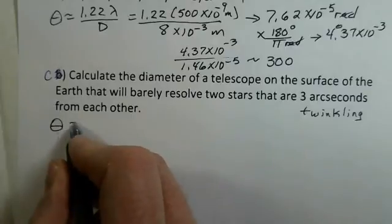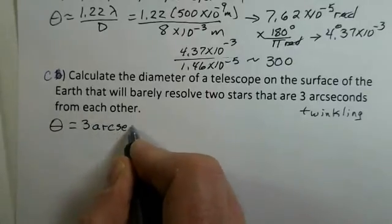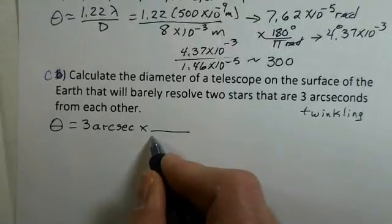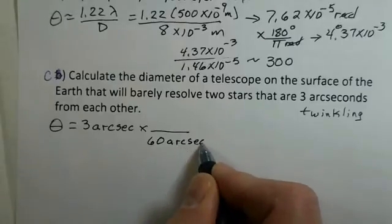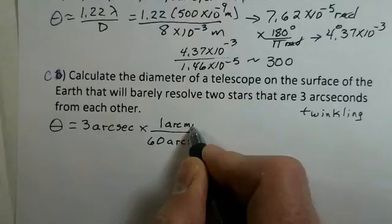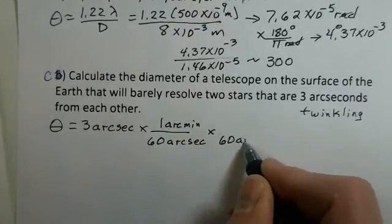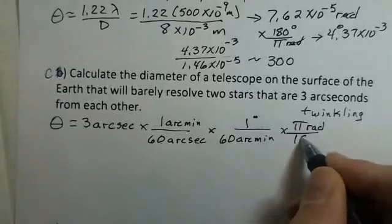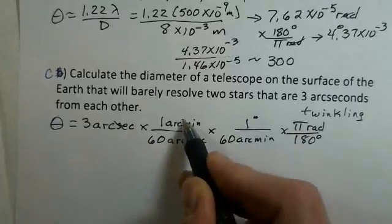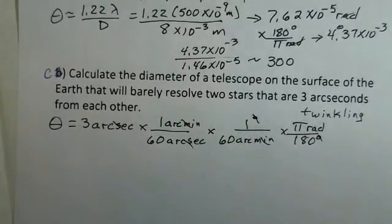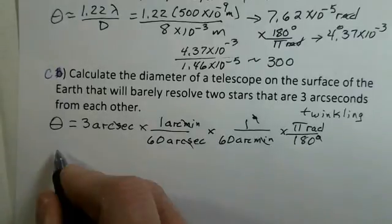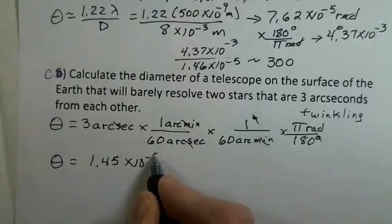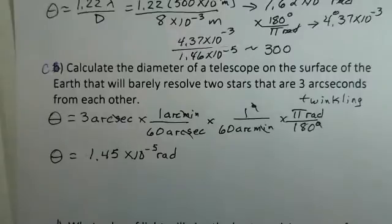I'm giving you the theta number now, three arc seconds. We need to do a little conversion because we need theta in radians. First we can convert to arc minutes by bringing in 60 arc seconds. It works just like a clock. 60 arc seconds is one arc minute. I'm headed towards degrees now. There are 60 arc minutes in one degree. There are pi radians in 180 degrees. Arc seconds have cancelled, arc minutes have cancelled, degrees have cancelled. When I put this through my calculator, I have a theta of 1.45 times 10 to the minus 5 radians.